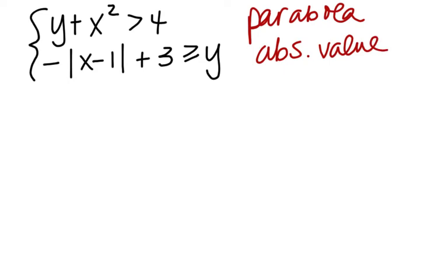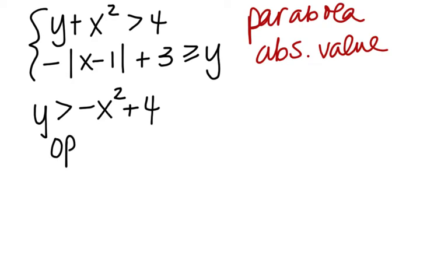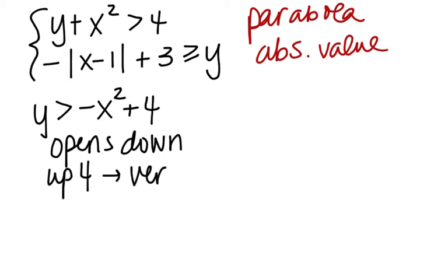We need to get both curves into a format that's better for graphing by solving for y. Taking the first inequality, if you subtract x squared you get y > -x² + 4. So it's a parabola that opens down because of the negative leading coefficient, and it's been shifted up 4. That tells us the vertex is at (0, 4).